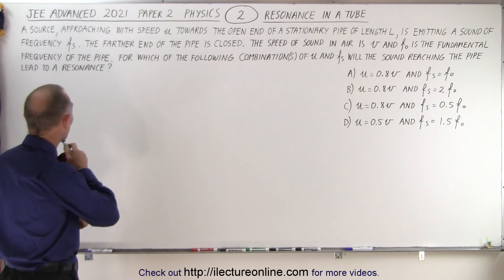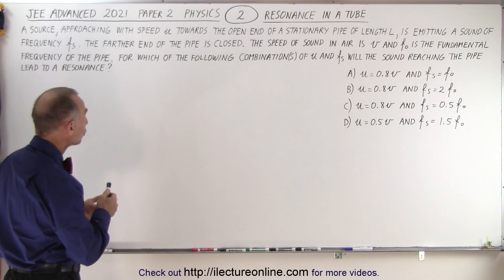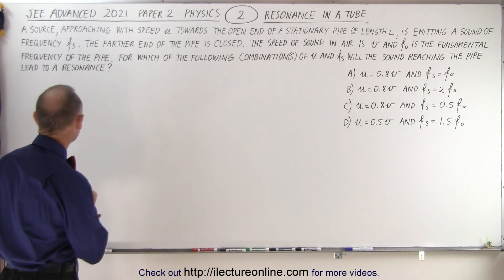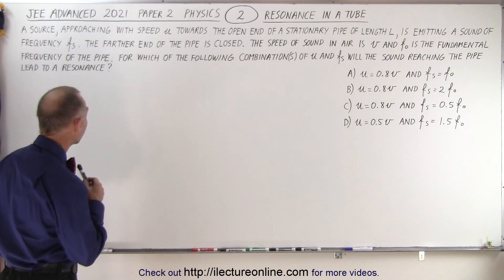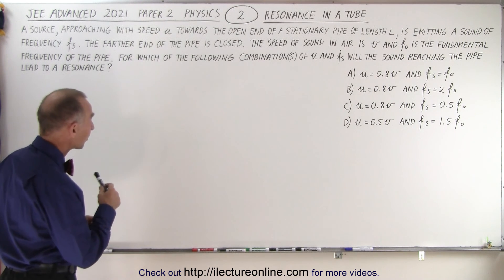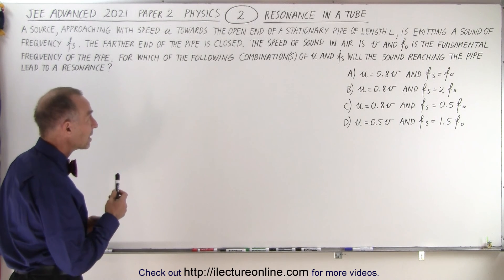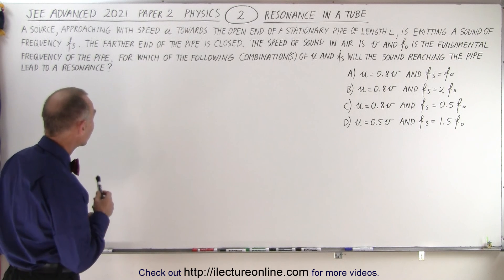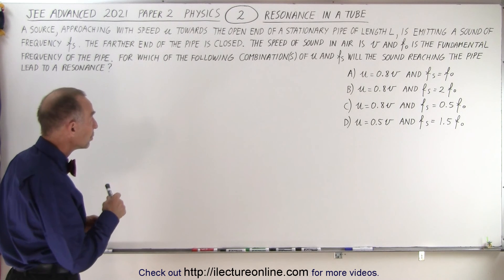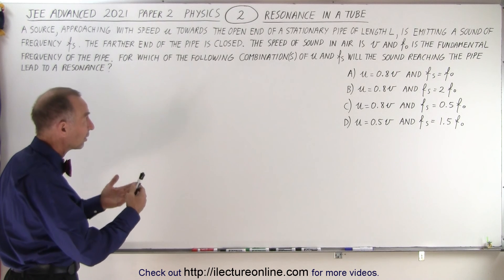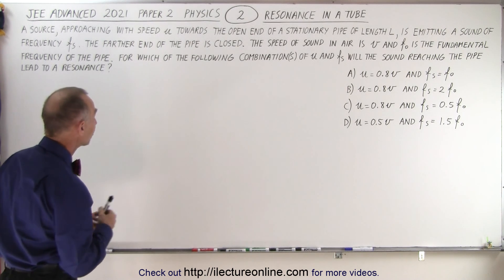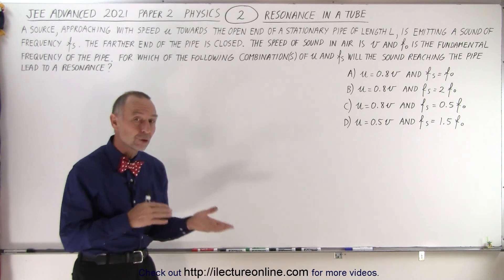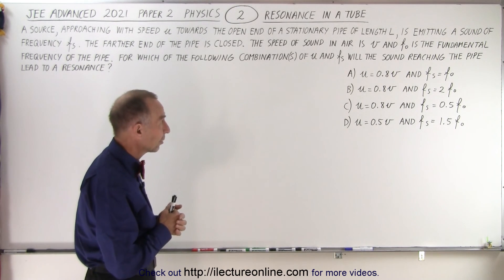The problem reads: a source approaching with speed u towards the open end of a stationary pipe of length l is emitting a sound of frequency f sub s. The farther end of the pipe is closed, the speed of sound in air is v, and f sub nought is the fundamental frequency of the pipe. For which of the following combinations of u and f sub s will the sound reaching the pipe lead to a resonance? They give us four combinations of u and f sub s.